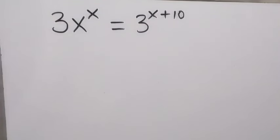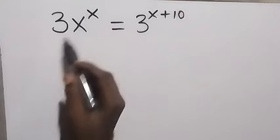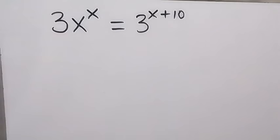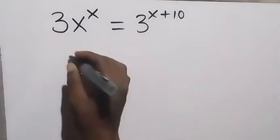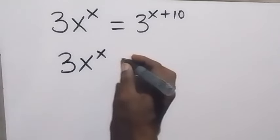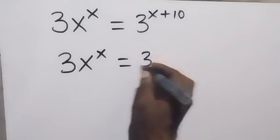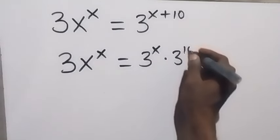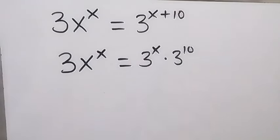Hello, you are welcome. How to solve this problem: 3x raised to power x equals 3 raised to power x plus 10. From here we can write this as 3x raised to power x equals 3 raised to power x times 3 raised to power 10, using the law of indices.